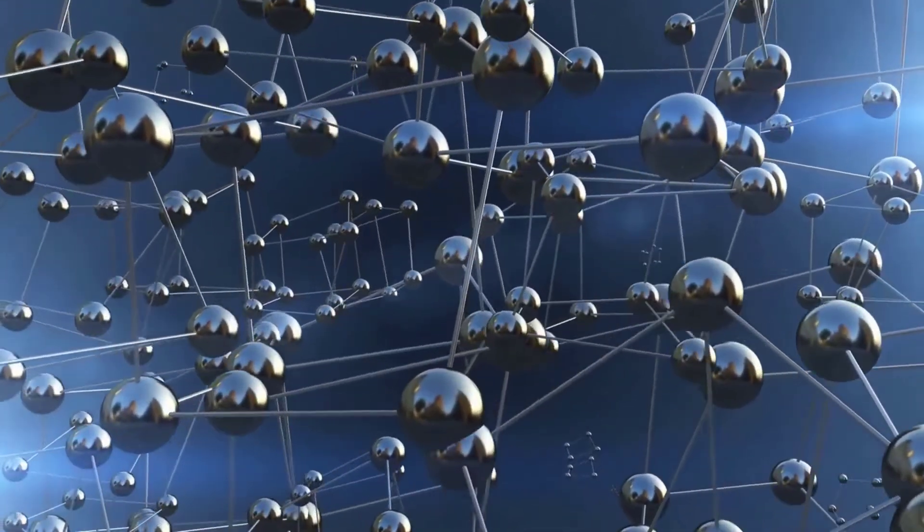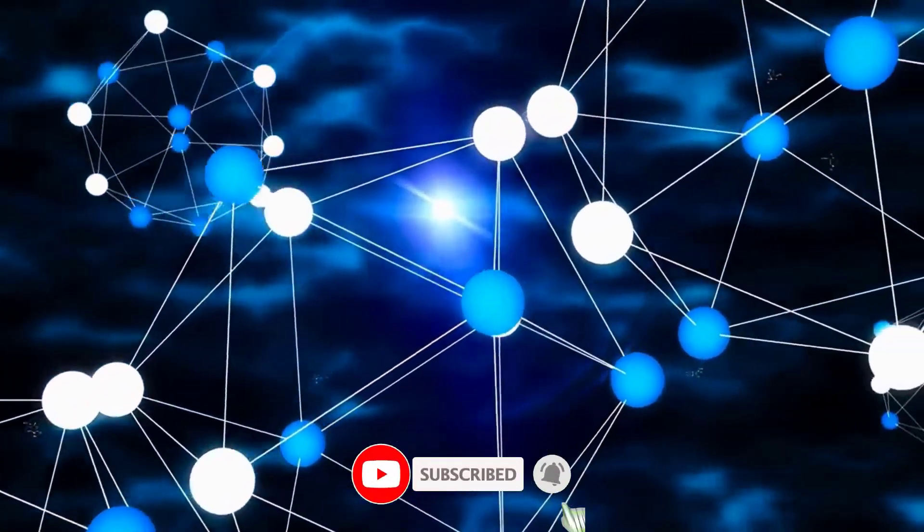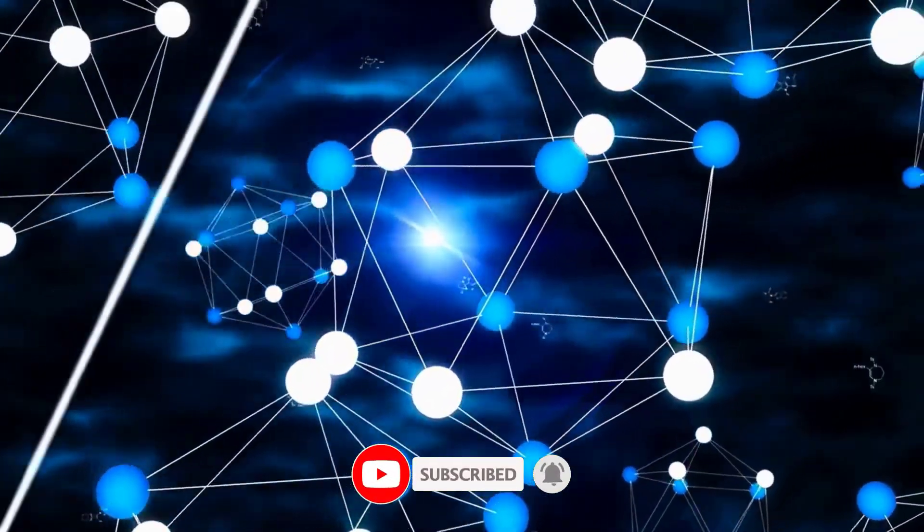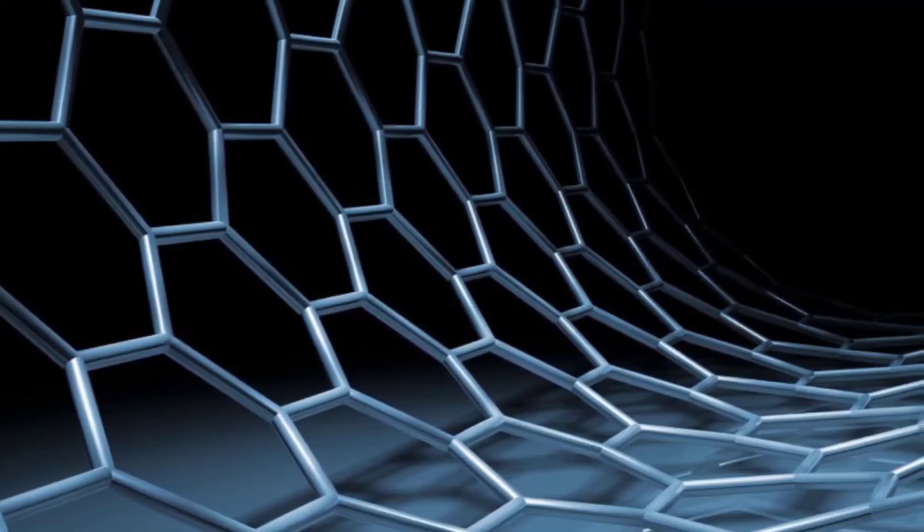The key to graphene's strength is its atomic-scale structure. The carbon atoms in graphene are bonded together very tightly, forming a strong, flat sheet. This structure also gives graphene its unique electrical properties.